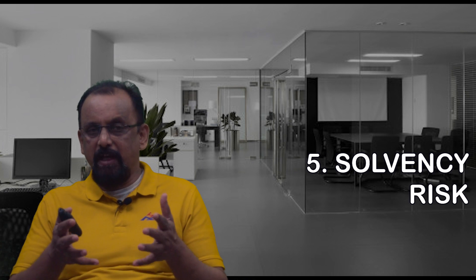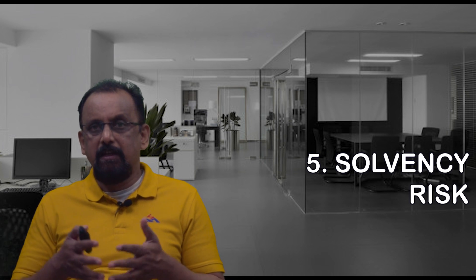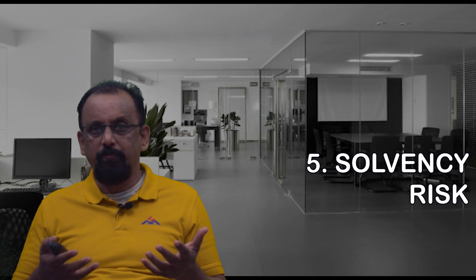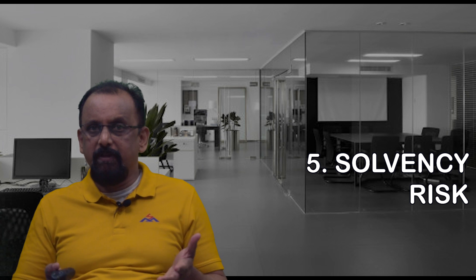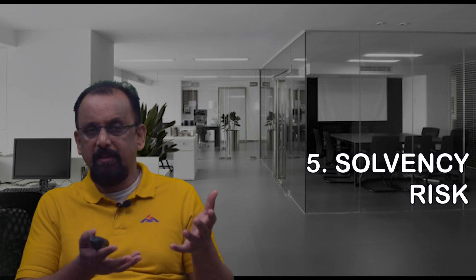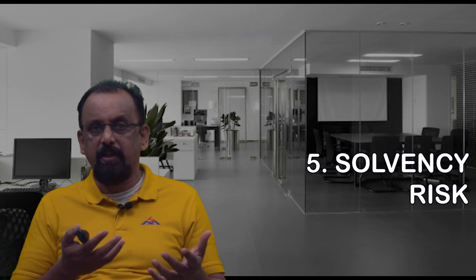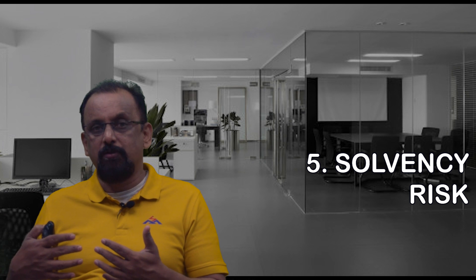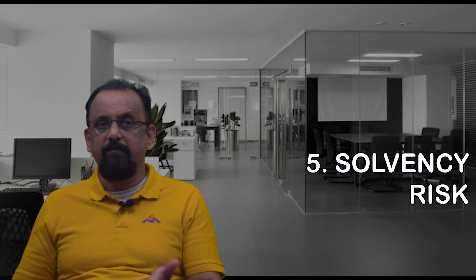The fifth important financial risk is solvency risk. I spoke about liquidity earlier; solvency is about long-term survival. As we know, insolvency is about not being able to pay off debtors. Solvency comes from mainly two or three factors: the capital structure - what is debt, what is equity, how they are sourced - and how are your operating cash flows compared to financing and investing cash flows.